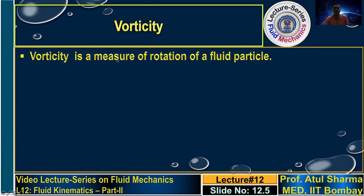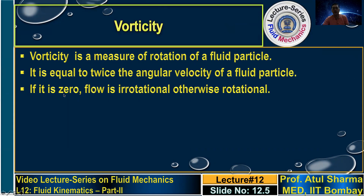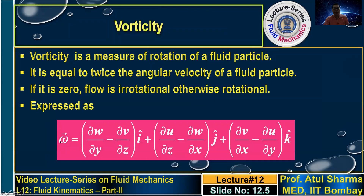Vorticity is a measure of rotation of a fluid particle, defined as equal to twice the angular velocity. If vorticity is zero, the fluid is not rotating and the flow is called irrotational; if non-zero, the flow is rotational. Vorticity, denoted by omega, is a vector quantity with x, y, and z components. The z-component omega_z, derived in the earlier lecture, is given as the curl of the velocity vector: omega_z = (del v/del x) minus (del u/del y).